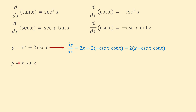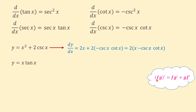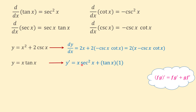Another example: y equals x times tangent of x. This function is the product of two functions — x and tangent of x — so we use the product rule: f times g prime equals f times g prime plus g times f prime, meaning first function times derivative of second plus second function times derivative of first. In our example, the first function is x and the second is tangent of x. The derivative equals x times the derivative of tangent, which is secant squared of x, plus tangent of x times the derivative of x, which is 1.